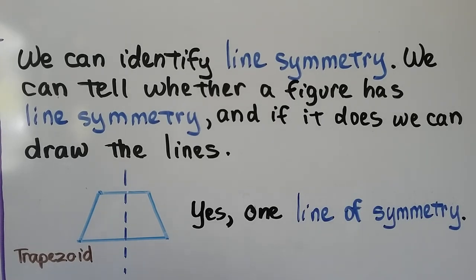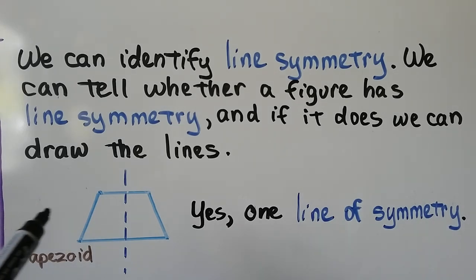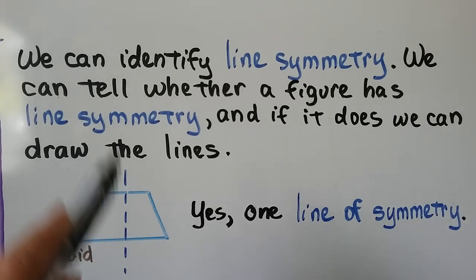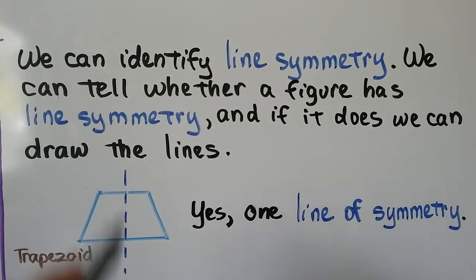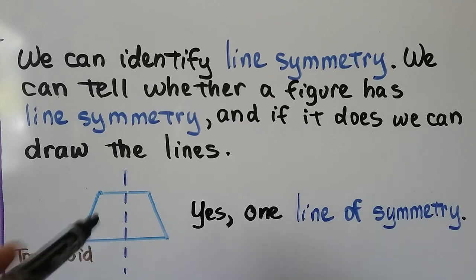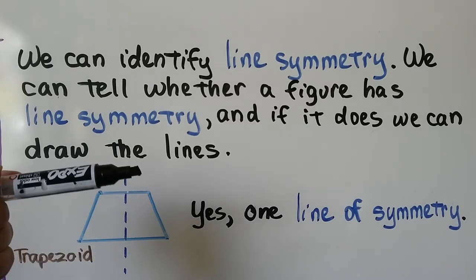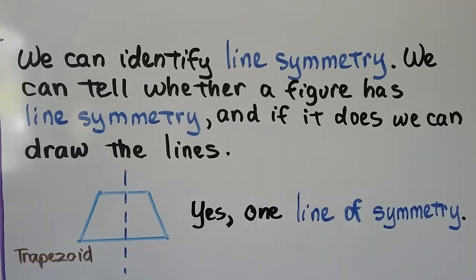We can identify line symmetry — we can tell whether a figure has line symmetry and if it does we can draw the lines. So for this trapezoid we have one line of symmetry going this way. We can't go horizontally because then if we folded the bottom up to the top it wouldn't coincide with itself.